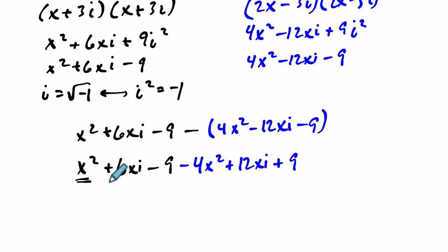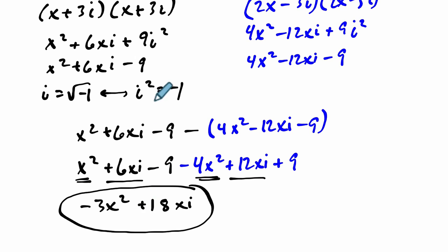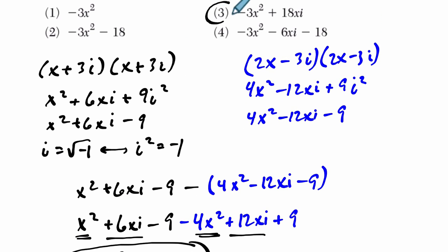And we get x squared minus 4x squared, that's negative 3x squared. 6xi plus 12xi is plus 18xi. Minus 9 plus 9, they cancel out. So that gives us negative 3x squared plus 18xi. Alright, hope that helps.